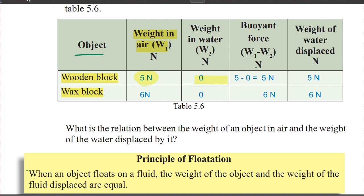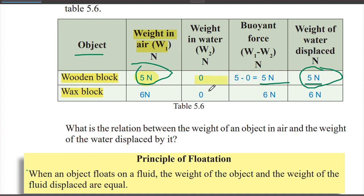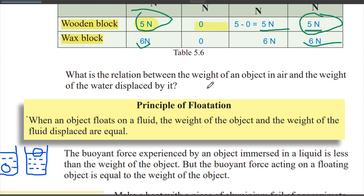What do we know? We can get the weight of water displaced. According to Archimedes' Principle, the weight of water displaced value equals the weight in air — that is, the weight of the object value is the same. So weight in air is equal to weight of the water displaced.